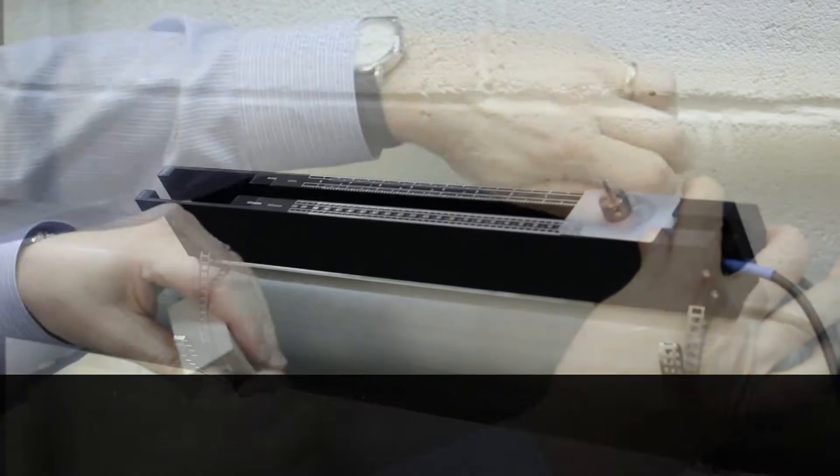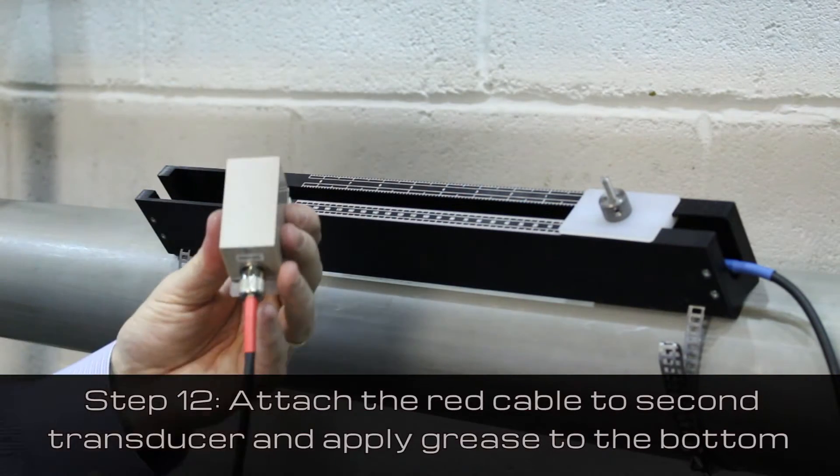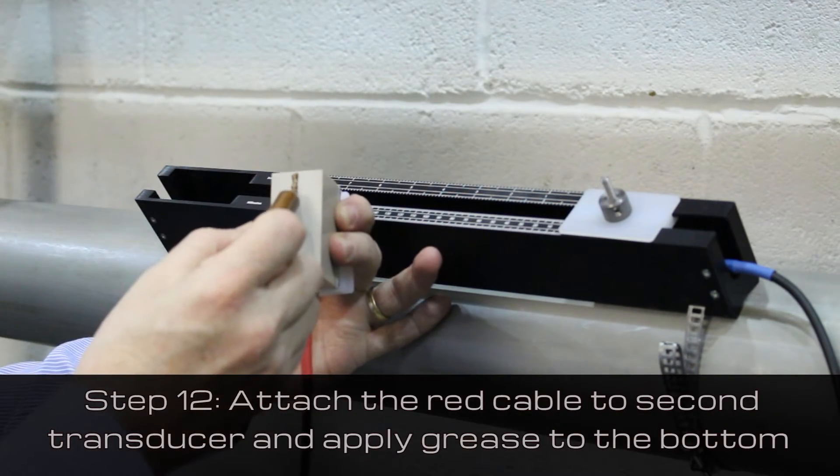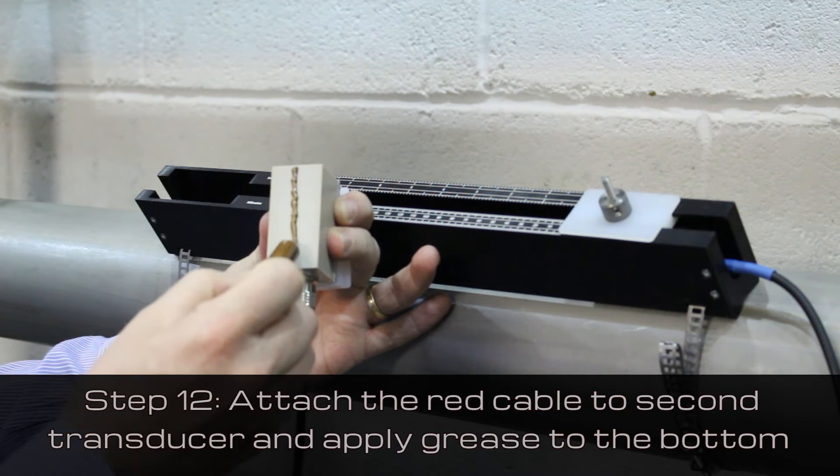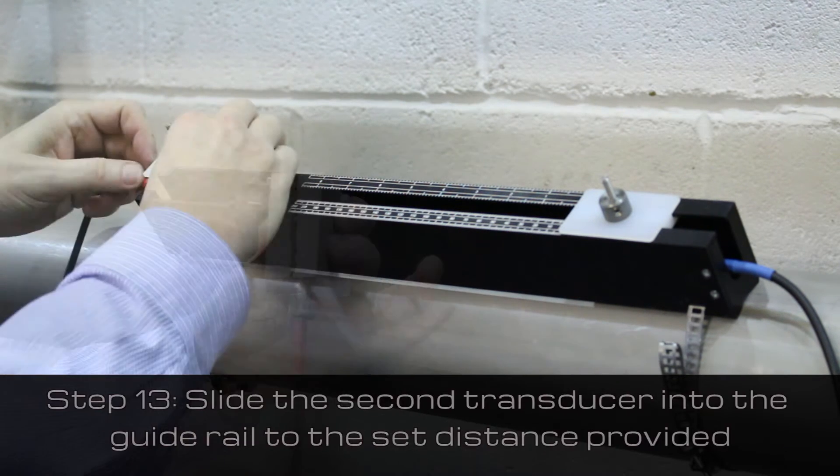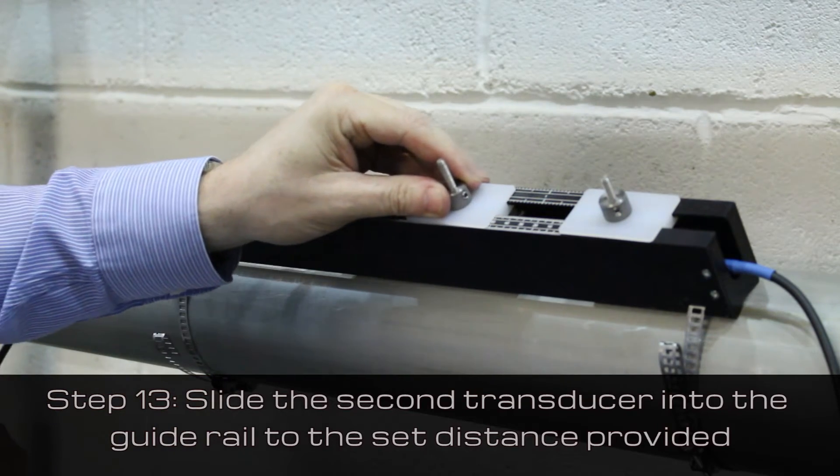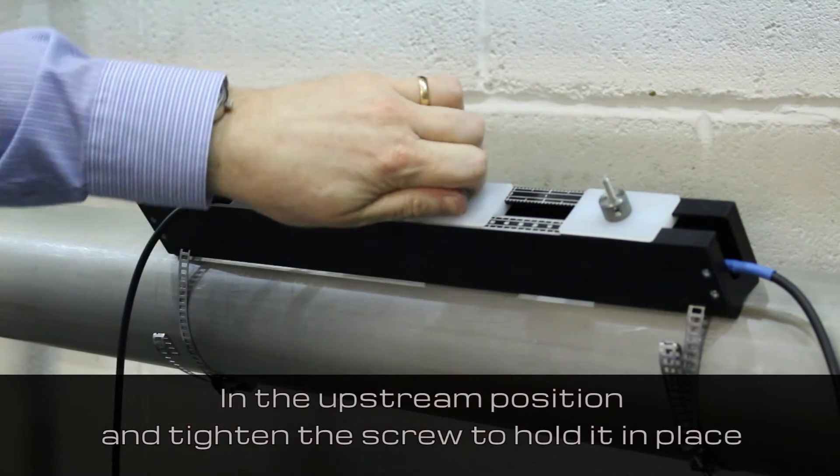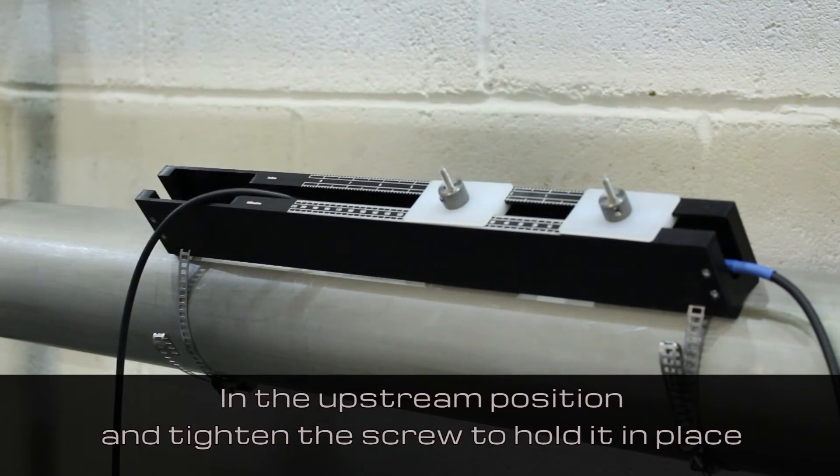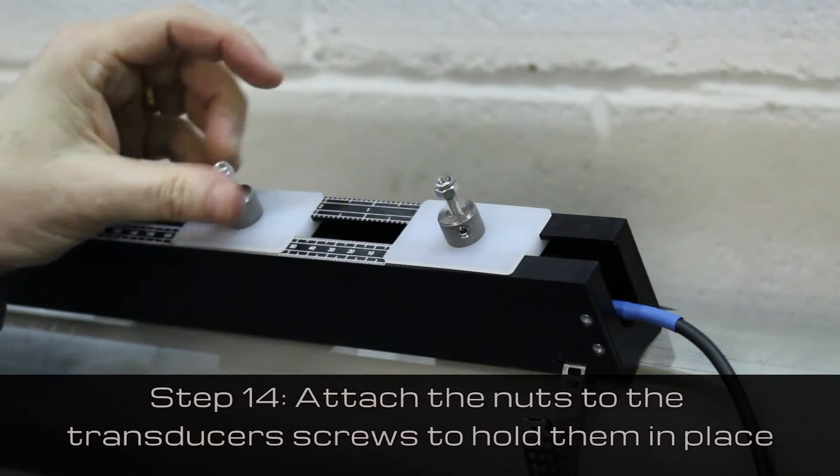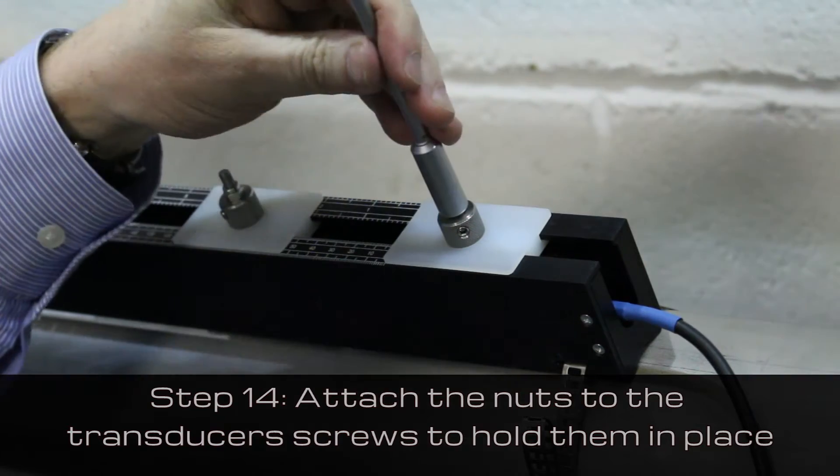Tighten the screw. Attach the red cable to the second transducer. Apply the grease and slide the transducer into the guide rail to the set distance provided by the flow meter in the upstream position. Tighten the screw. Attach the nuts to the transducer screws to hold them in place.